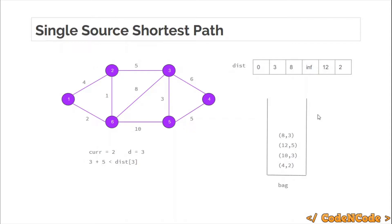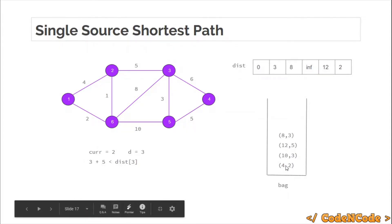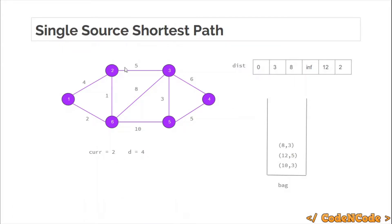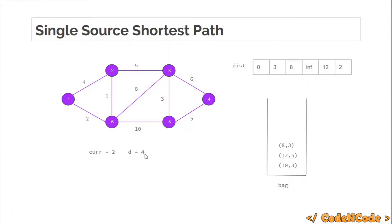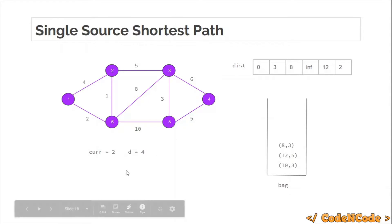The priority queue is not empty. We find the next element with smallest weight which is (4, 2). But this is outdated data — label (3, 2) was the latest label and we have already processed that. So even though we follow the procedure and try to minimize the neighbors of node 2, nothing would happen: 4 plus 4 is 8 which is not smaller than 0, 4 plus 1 is 5 which is not smaller than 2, and 4 plus 5 is 9 which is not smaller than 8. So nothing happens and we continue.